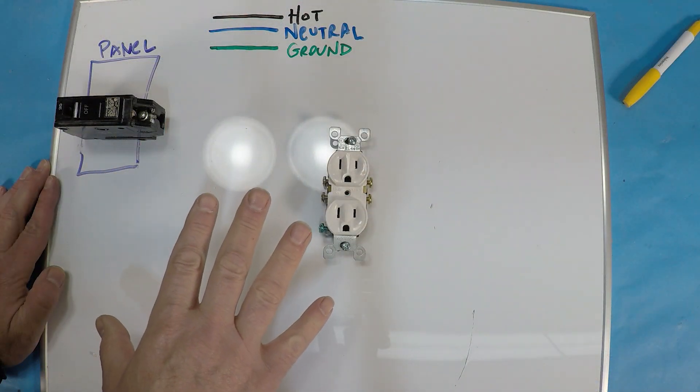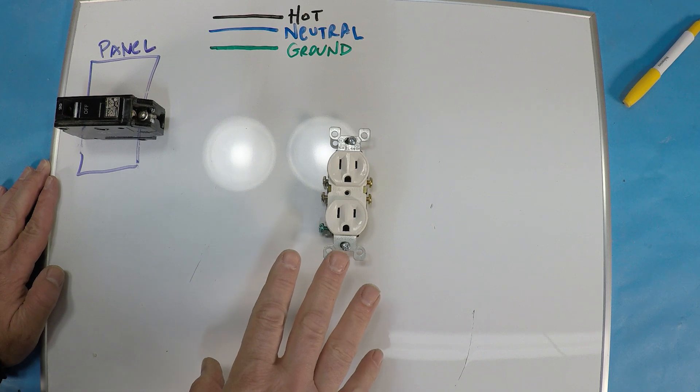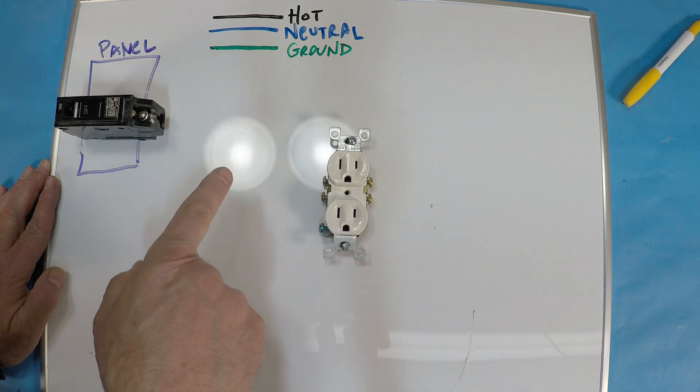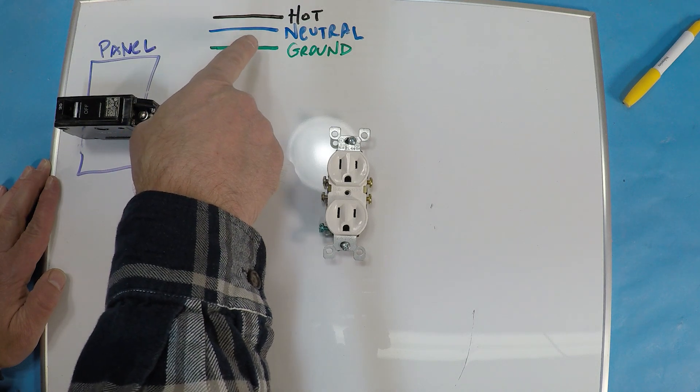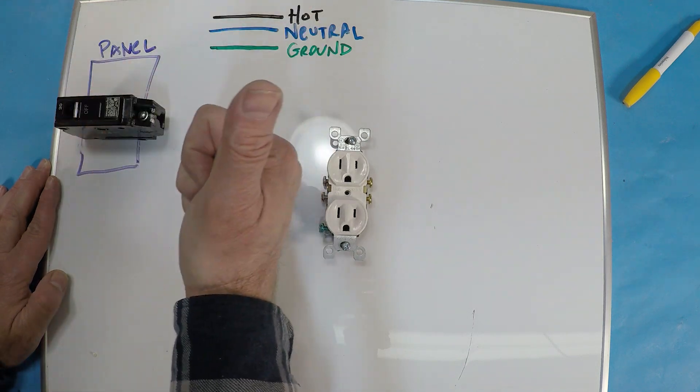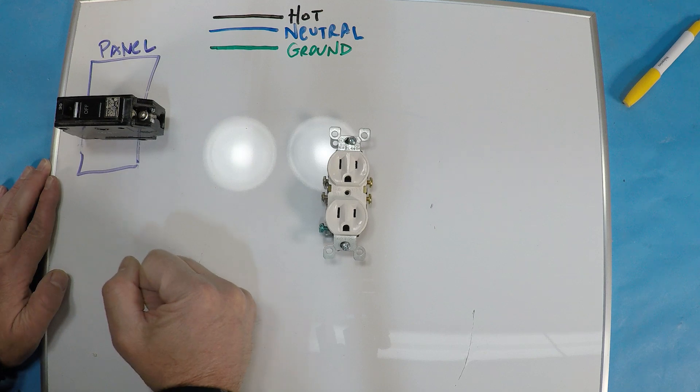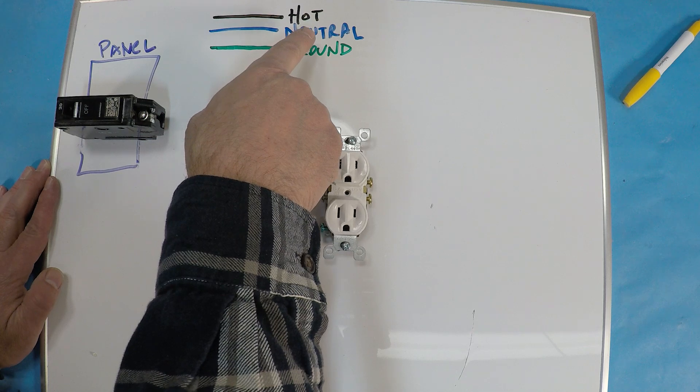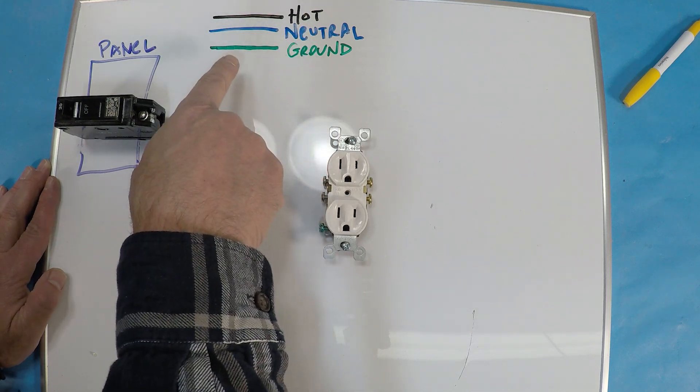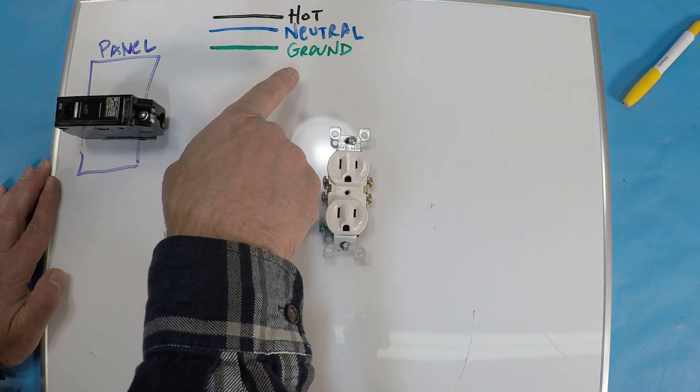So we are here and we're going to simulate a circuit. For the color schemes we've got black is hot, this blue or purple—slightly colorblind everyone, just a little peek under the tent here, flannel guy can't tell certain colors—I think it's blue, and then green is ground.